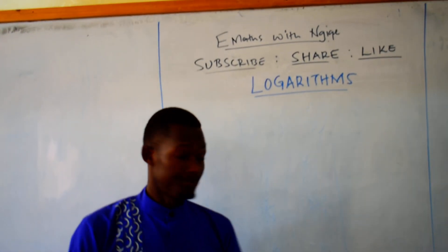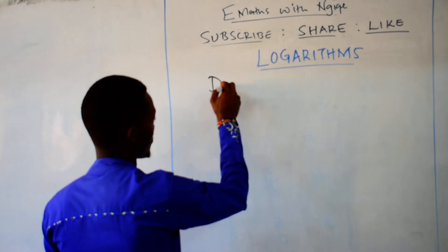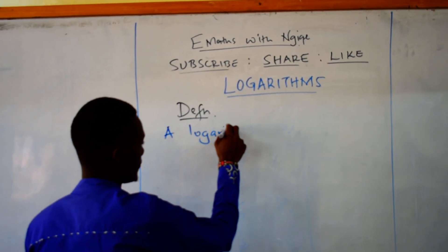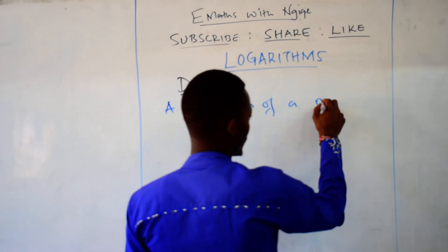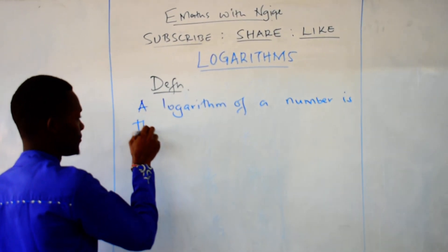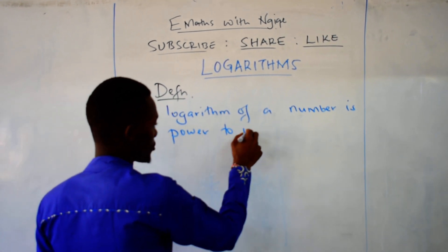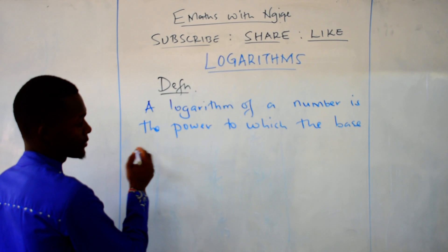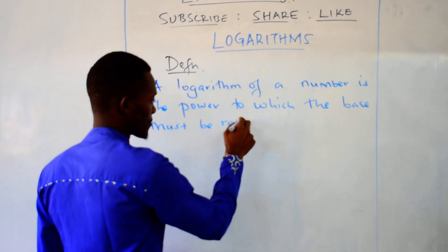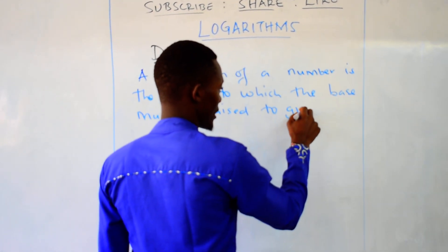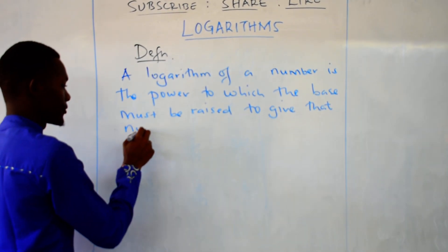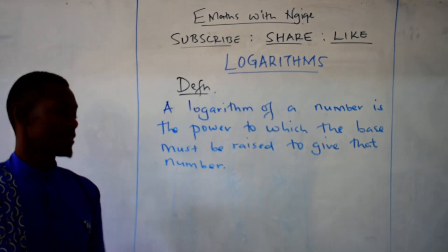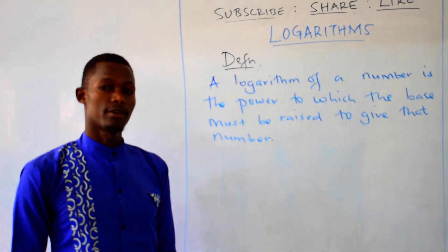Now let's check logarithms. What is logarithms? Let's find the definition. A logarithm of a number is the power to which the base must be raised to give that number. So, the logarithm of a number is the power to which the base must be raised to give that specific number.